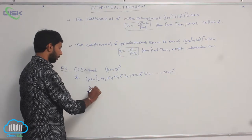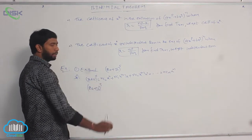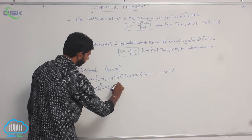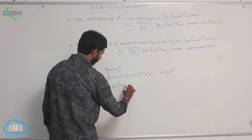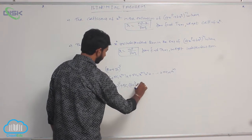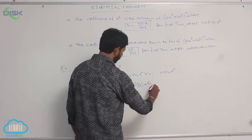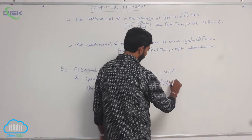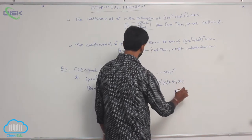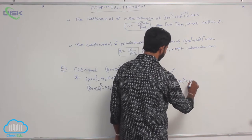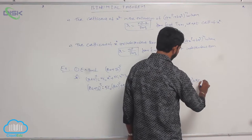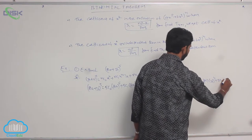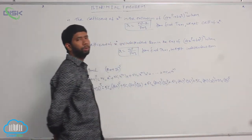Here the expression is of the form (2a + 3b)^5, where n = 5 and b is replaced by 3b. Expanding: 5C0·(2a)^5 + 5C1·(2a)^4·(3b) + 5C2·(2a)^3·(3b)^2 + 5C3·(2a)^2·(3b)^3 + 5C4·(2a)·(3b)^4 + 5C5·(3b)^5.